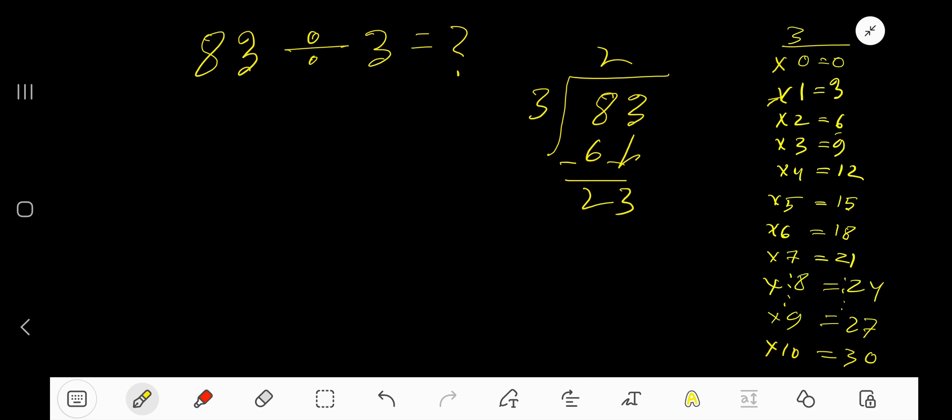8 times 24, which is greater, so 7 times. Write 7. 7 times 3 is 21. Subtract 2. So your answer is 27 remainder 2. But if you want to write your answer in decimal form, then take your decimal.